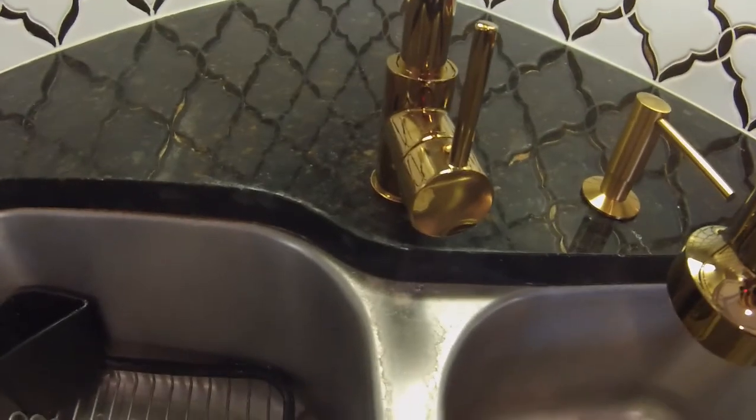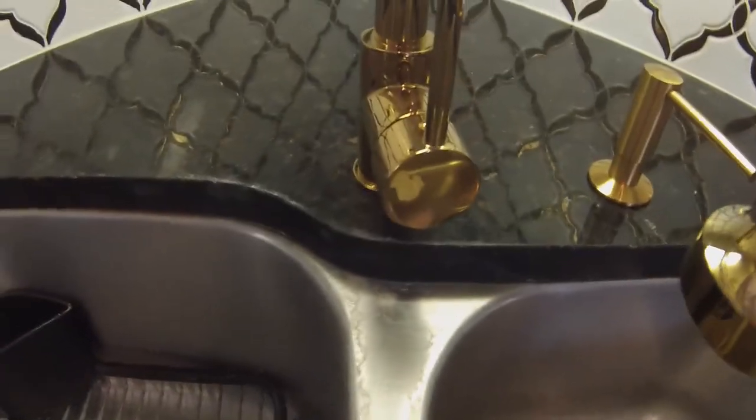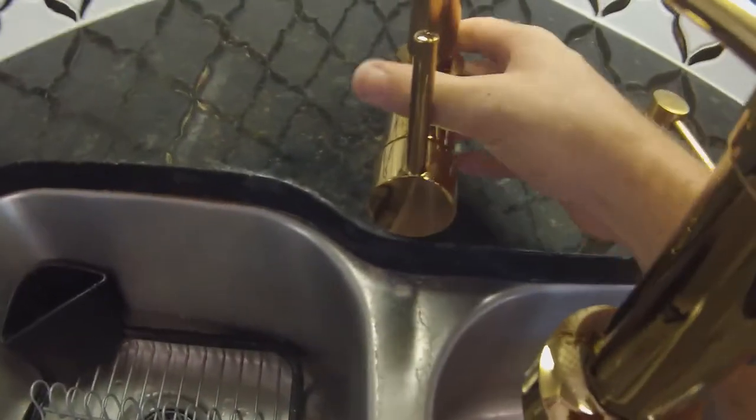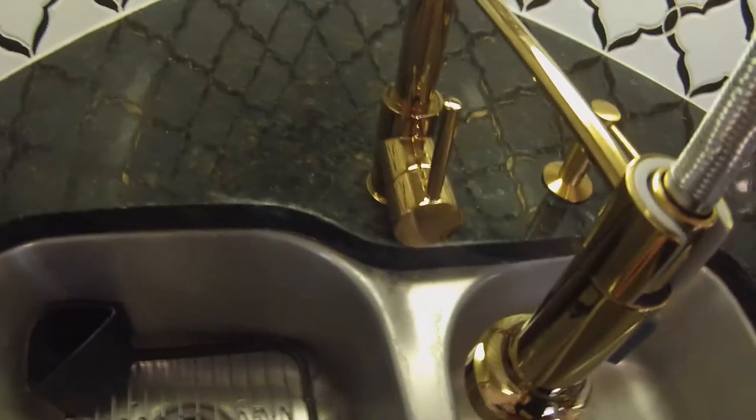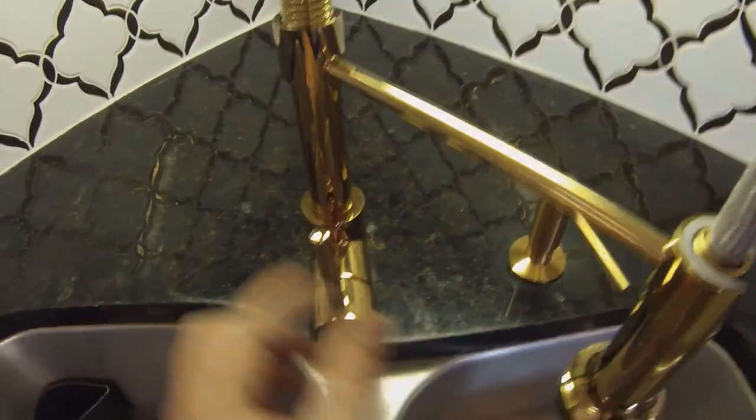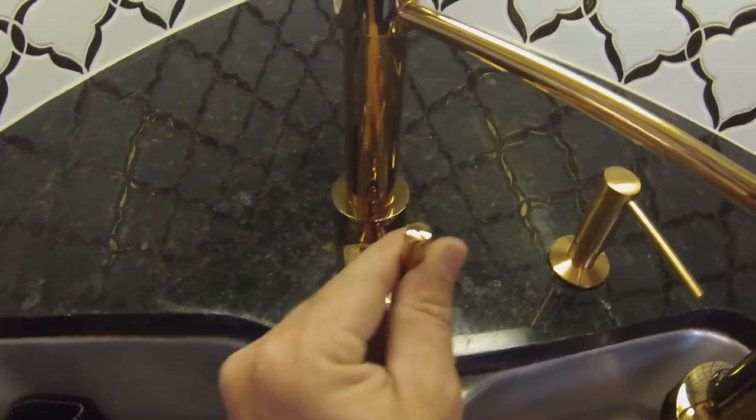Once you start to get it tightened from underneath, you can come up and see if you're not quite straight. You can apply some leverage and try to tighten it this way and then see how good it is. Once you're properly tight, you should have your faucet if it turns, turn it without any movement in the base.